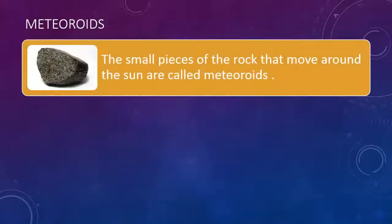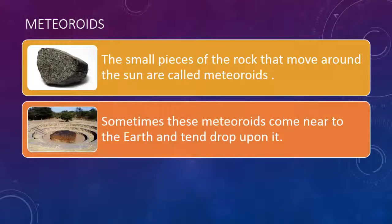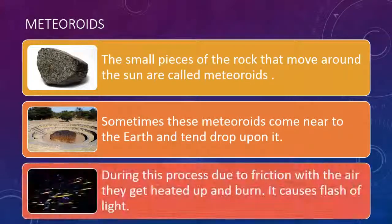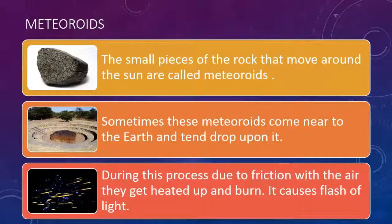Meteoroids: The small pieces of rock that move around the Sun are called meteoroids. Sometimes these meteoroids come near to the Earth and tend to drop upon it. During this process, due to friction with the air, they get heated up and burn, causing a flash of light.